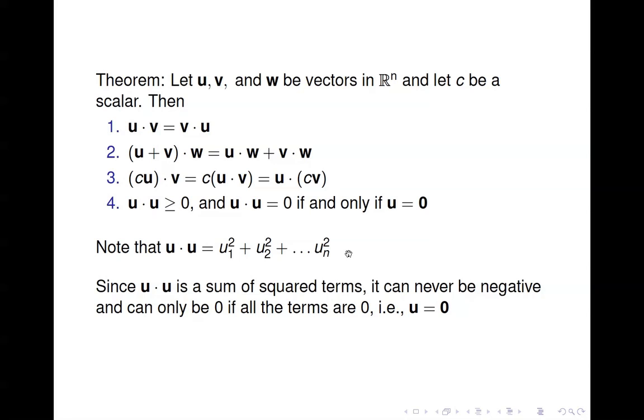Notice that the only way that it can be 0, and it's always going to be greater than or equal to 0, but the only way it can equal 0 is if each of these terms is 0. Since they're all non-negative, they all have to be 0 for the sum to be 0. So u dot u is always greater than or equal to 0, and it equals 0 if and only if u is the 0 vector.